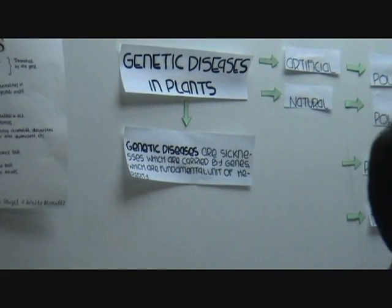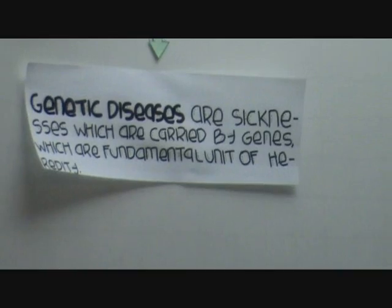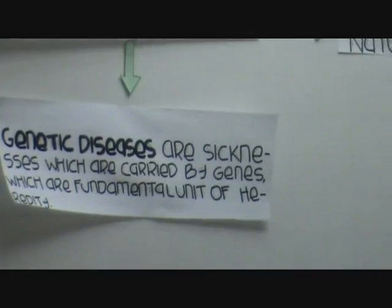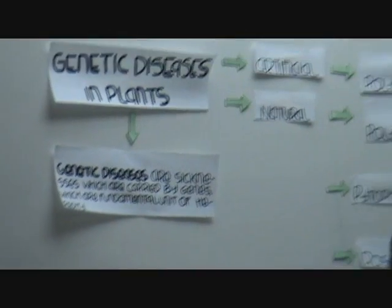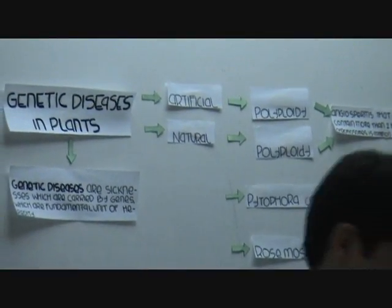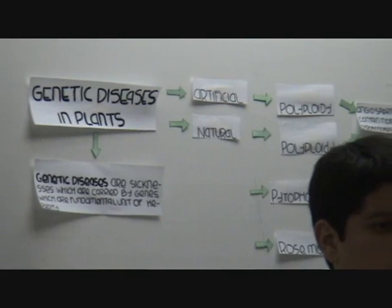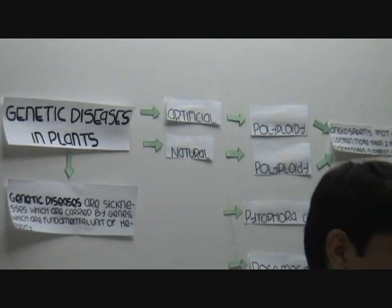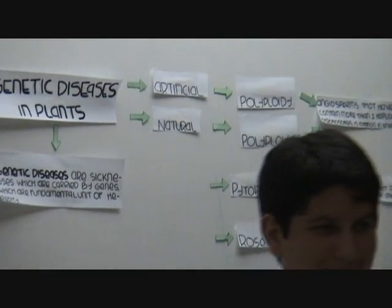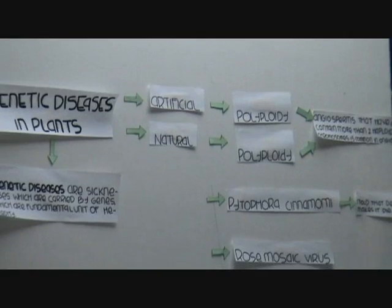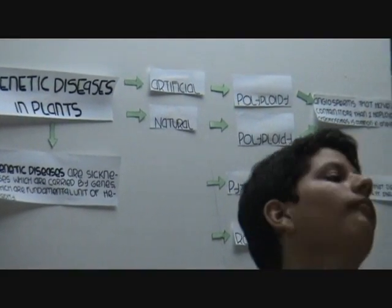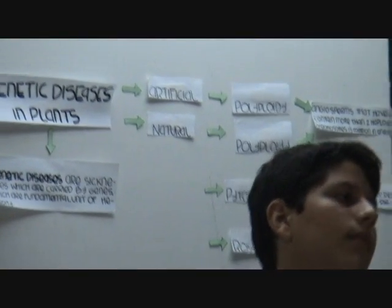We could classify, according to the information we had, the diseases into two groups: natural and artificial. Artificial is polyploidy, because polyploidy can also be generated in labs.